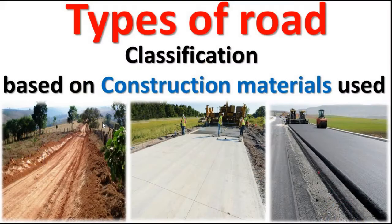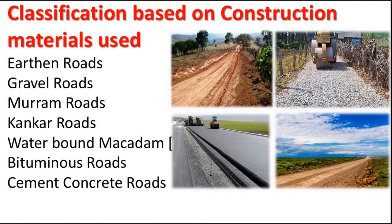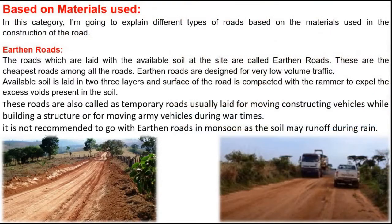Assalamu alaikum, dear students. Today we will study about types of roads based on construction material used. The classification based on construction material includes: earthen roads, gravel roads, marum roads, kankar roads, water bound macadam roads, bitumen roads, and cement concrete roads. I am going to explain each type based on the material used in construction.